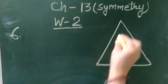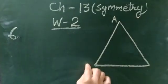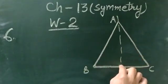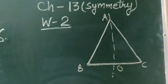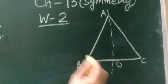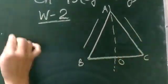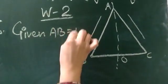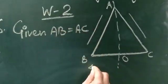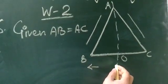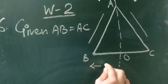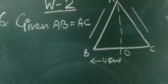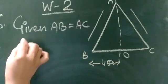This is your isosceles triangle ABC. This is the line of symmetry — let's take this point as O. AB is equal to AC — these are your given points. AC and BO are given as 4.5 cm. OB is given as 4.5 cm.